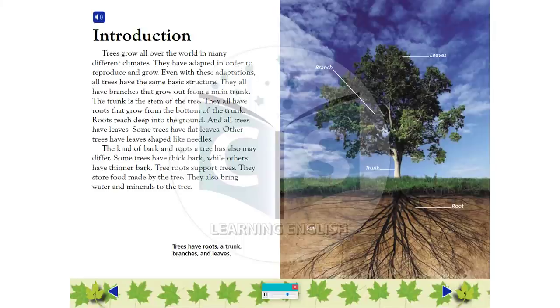The kind of bark and roots a tree has also may differ. Some trees have thick bark, while others have thinner bark. Tree roots support trees. They store food made by the tree. They also bring water and minerals to the tree.